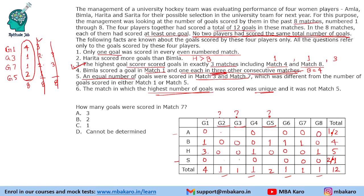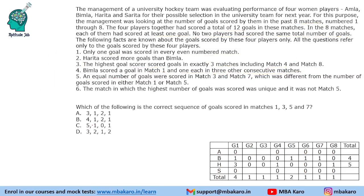Question 1: How many goals were scored in match 7? Match 7 had 1 goal scored. Question 2: What is the correct sequence of goals scored in matches 1, 3, 5 and 7? The answer is 4, 1, 2, 1.